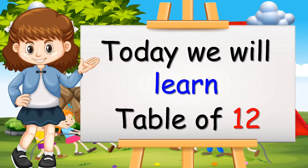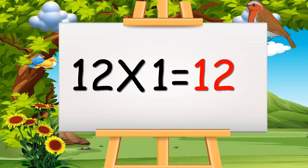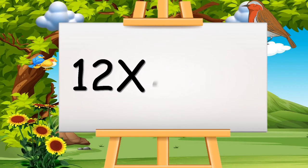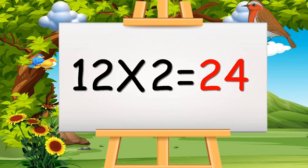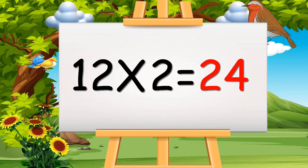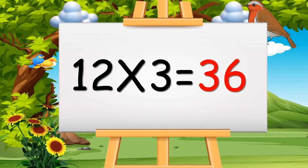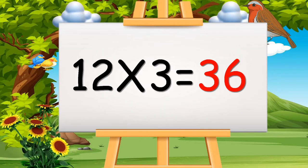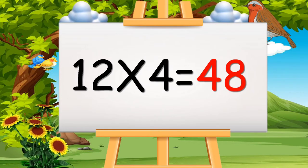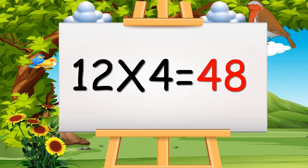Today we will learn the Table of 12. 12 ones are 12. 12 ones are 12. 12 twos are 24. 12 twos are 24. 12 threes are 36. 12 threes are 36. 12 fours are 48. 12 fours are 48.